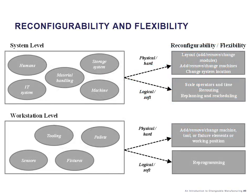This notion of changeability enablers can be a bit hard to grasp, but imagine a manufacturing system composed of humans, IT systems, material handling, storage systems, and machines. In order to accomplish change in this system, we can implement physical hard enablers and logical soft enablers. A physical enabler could be a layout change — adding, removing, or changing modules of the system to accommodate a different process sequence. It could also be adding, removing, or changing machines of the line, or changing the system location. These are types of enablers that physically change the structure of the system.